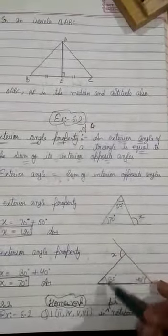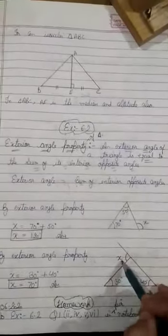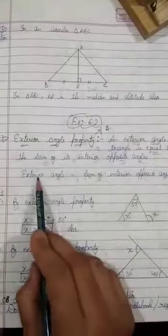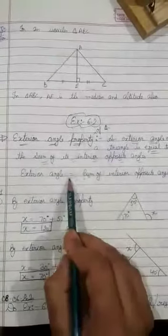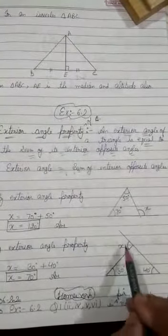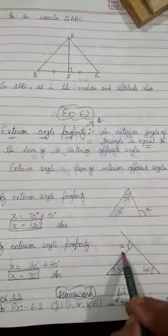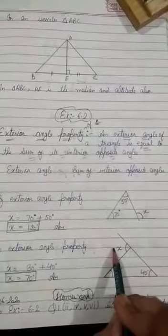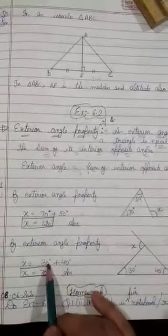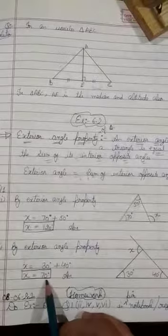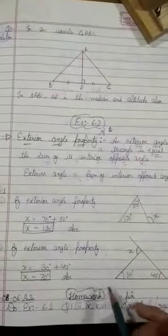According to the exterior angle property, the exterior angle x is equal to the sum of the interior opposite angles. The interior opposite angles of x are 30 degrees and 40 degrees. Their sum is 30 plus 40, so the value of x is 70 degrees. That is your answer.